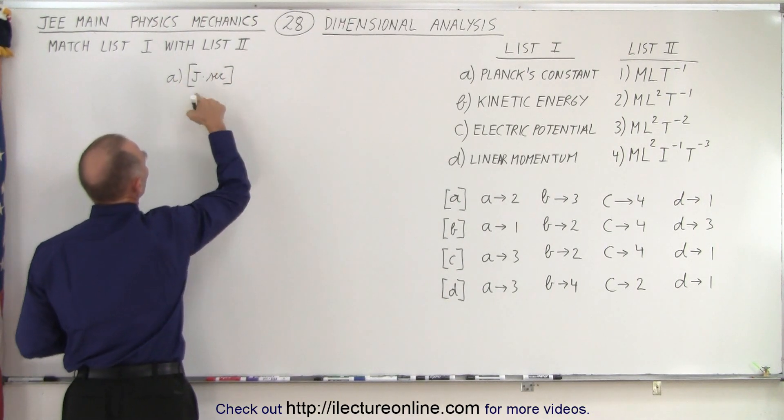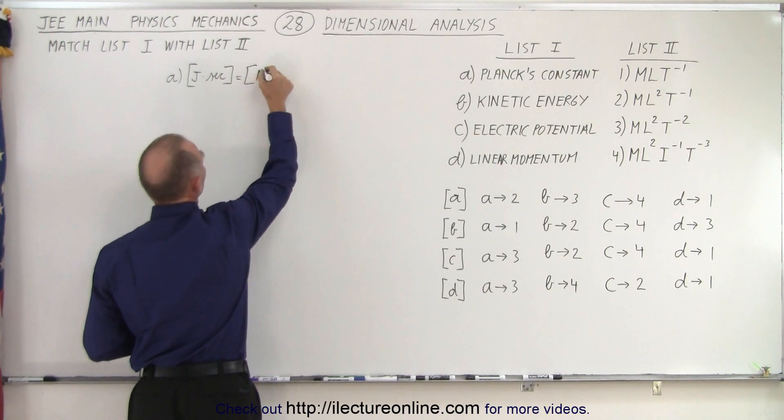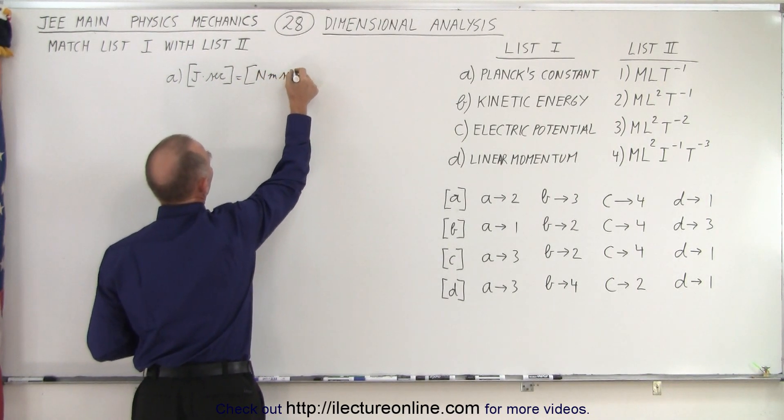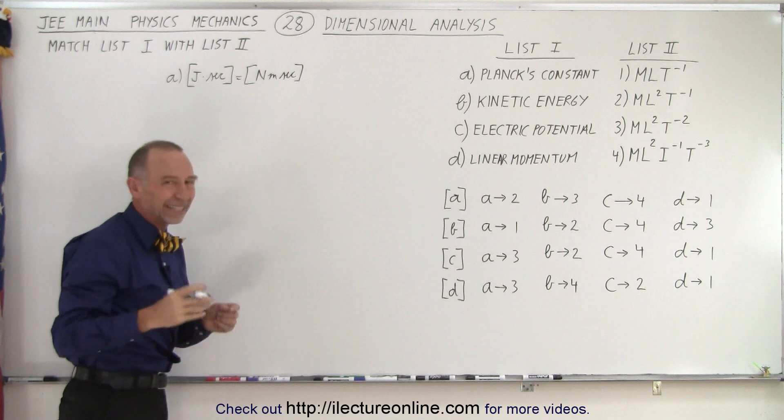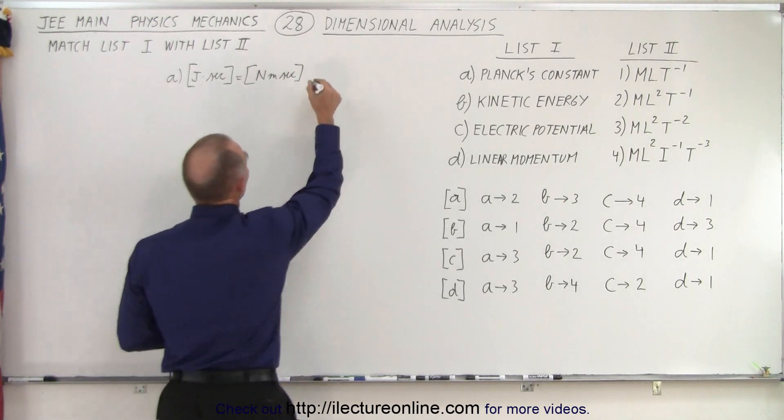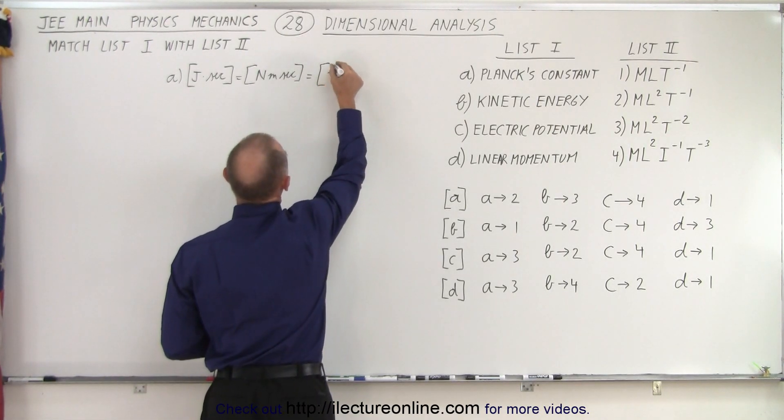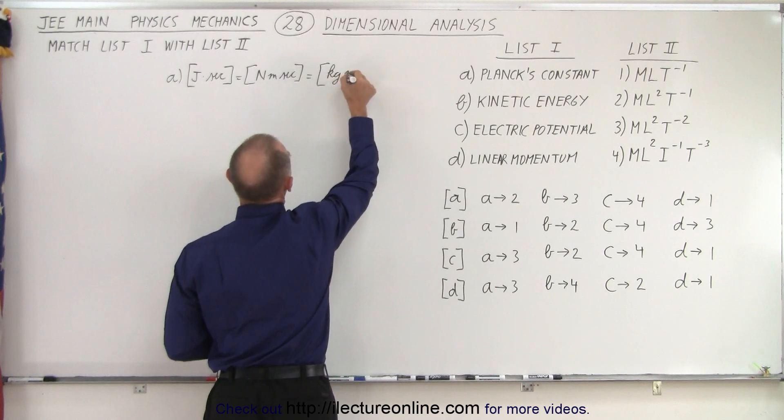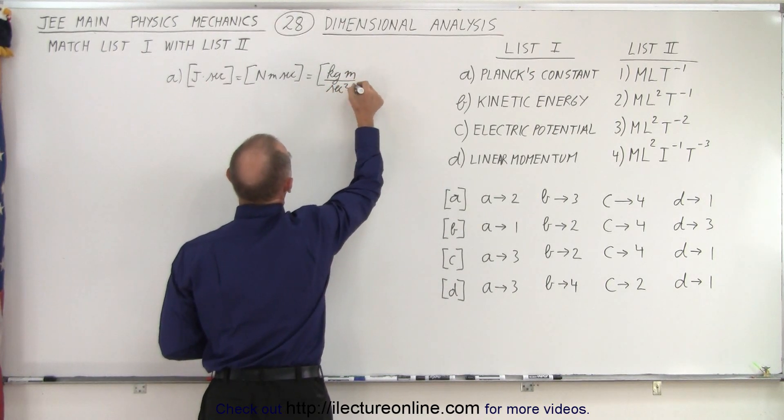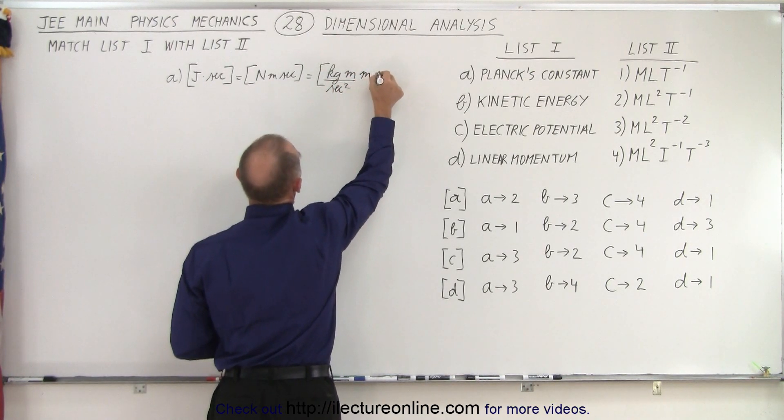So for part A we have joules times seconds. Now a joule is a newton meter, so that's equal to a newton meter times seconds. And a newton is a kilogram meter per second squared.